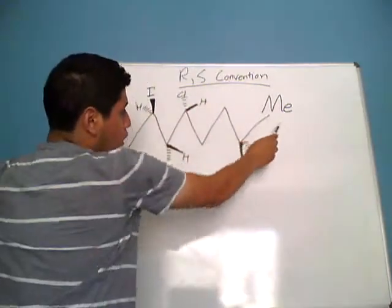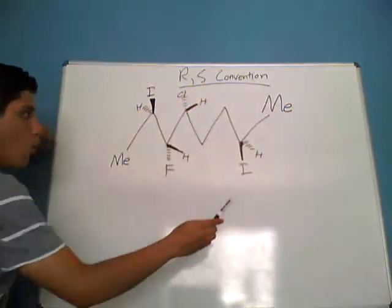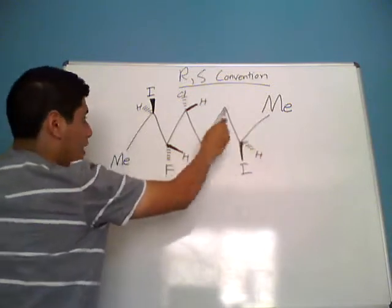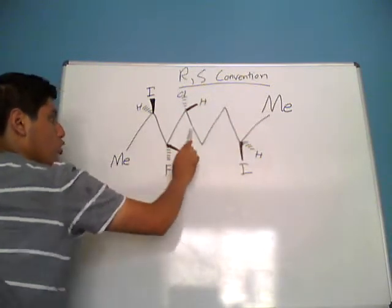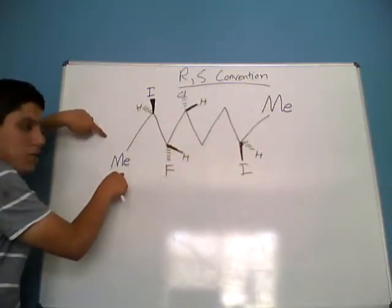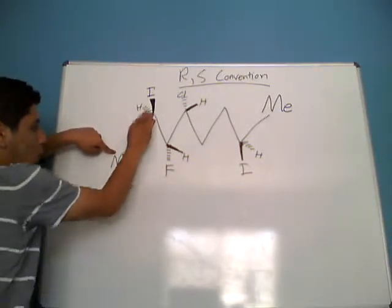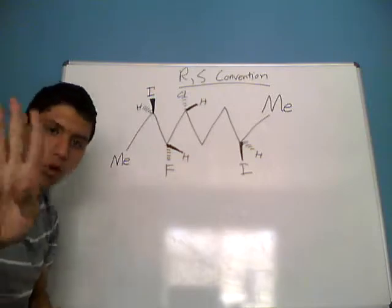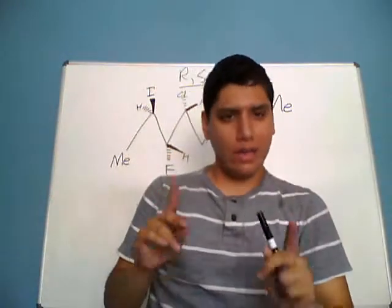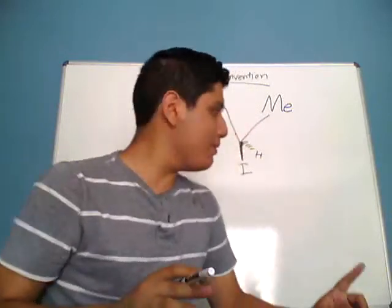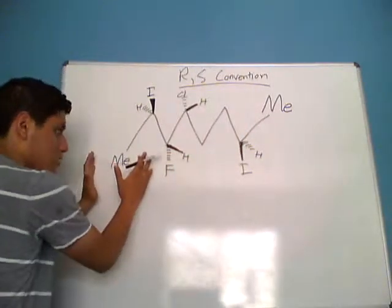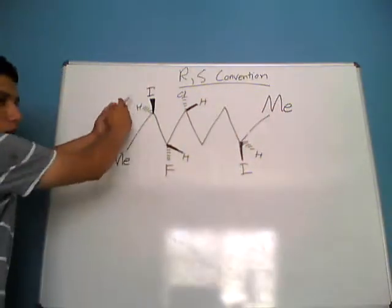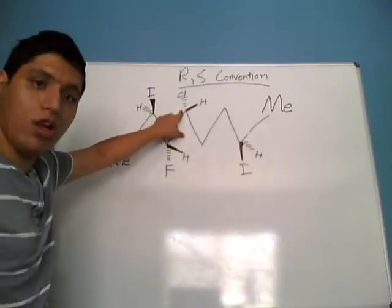One final rule when you're naming these compounds: the first substituent has to have the lowest number. Chlorine is going to be the first substituent because C is the earliest letter of the alphabet here. So what side do we start from? When we start from one side, chlorine is bonded to the fifth carbon. When we start from the other side, you have 1, 2, 3, 4 — chlorine is bonded to the fourth carbon. Four is less than five, so we go with this side because starting from this side gives chlorine the lower numbering.